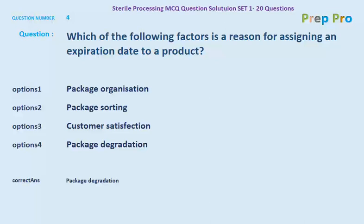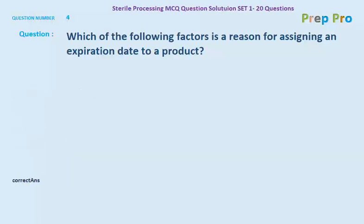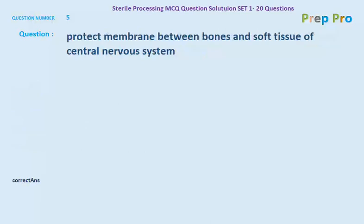Question number five: what protects the membrane between bones and soft tissue of the central nervous system?